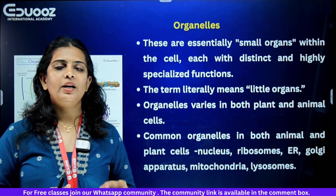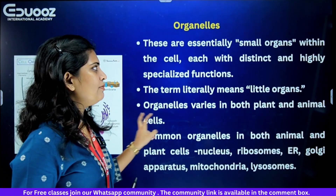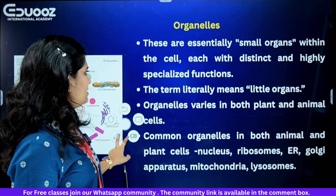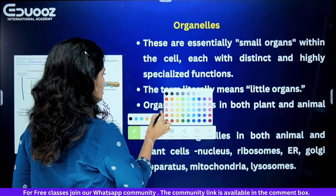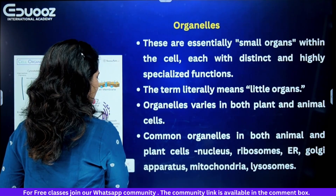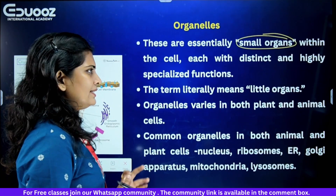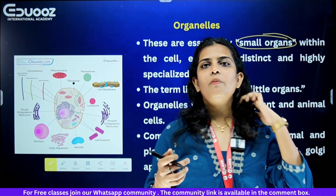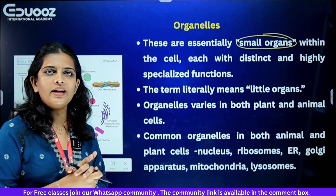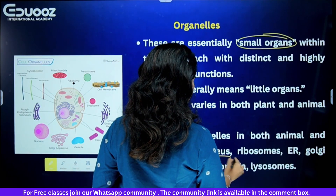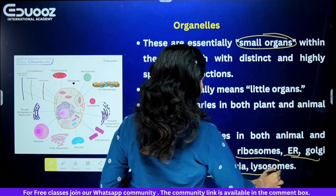Organelles are called little organs — they are essentially small organs within the cell, each with a distinct and highly specialized function. Common organelles found in both animal and plant cells include the nucleus, ribosomes, endoplasmic reticulum, Golgi apparatus, mitochondria, and lysosomes.